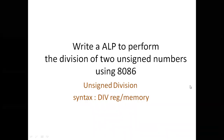Welcome to Microprocessor Lab. In this session we are going to learn how to write an assembly language program to perform the division of two unsigned numbers using 8086. The division operations can be performed on unsigned numbers and signed numbers. Let us concentrate on the division of two unsigned numbers.